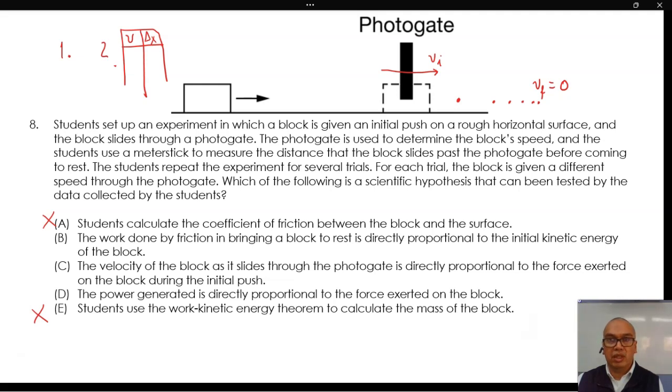Let us look at option C. The velocity of the block as it slides through the photogate is directly proportional to the force exerted on the block during the initial push. That force is not being measured in this experiment. Therefore, this is not a valid hypothesis.